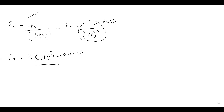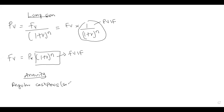However, as opposed to lump sum, we also have something we call annuity. Annuity refers to regular cash flows, and the cash flows must be the same. There is also a terminal period.